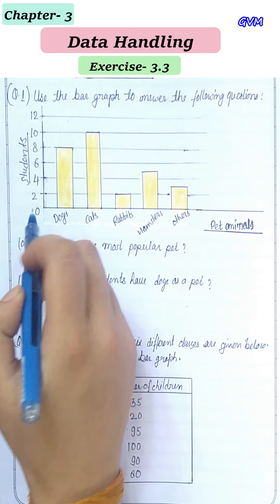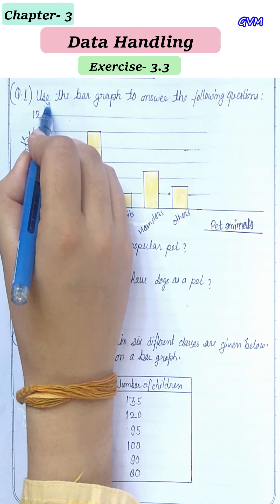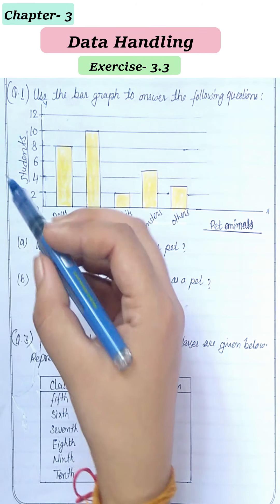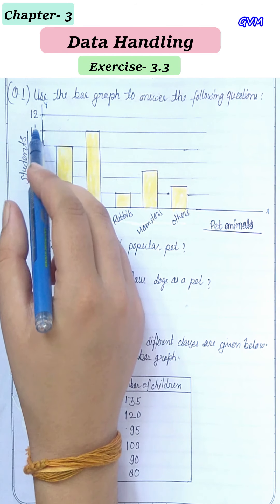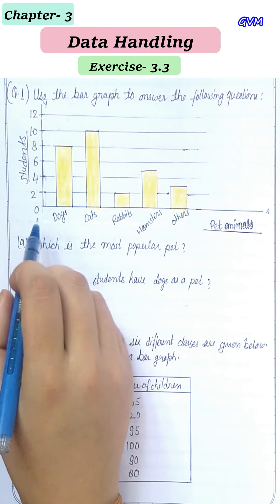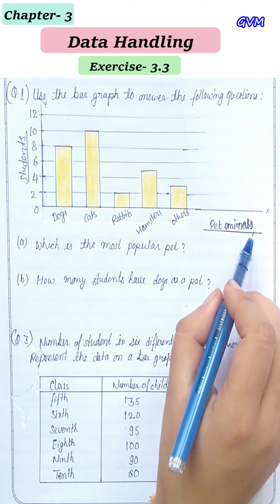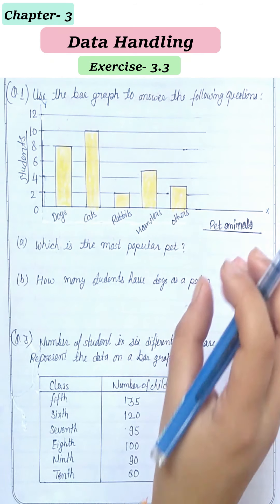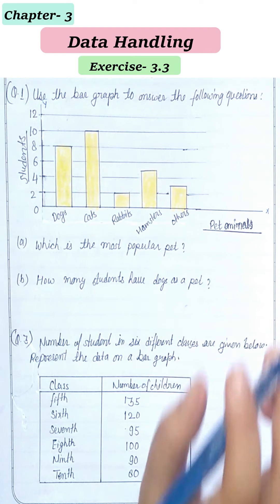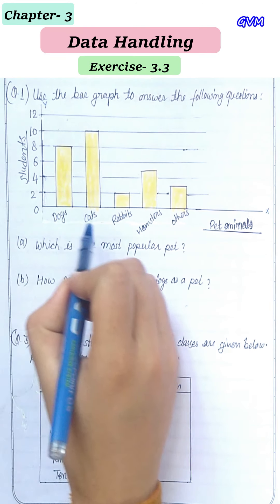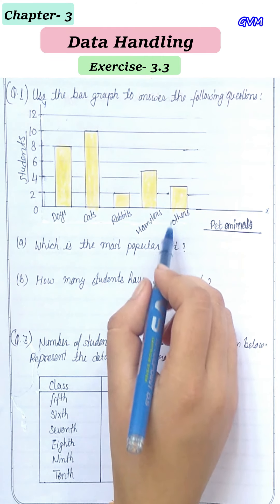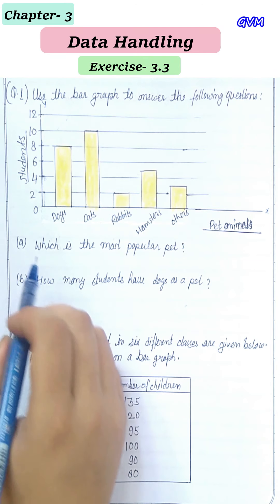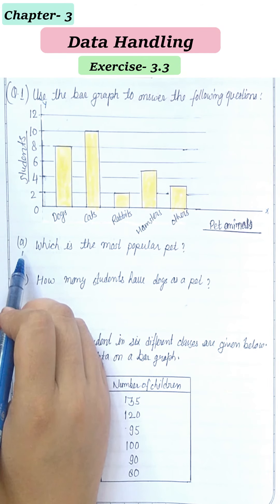We are given a bar graph. On the y-axis we have the number of students: 0, 2, 4, 6, 8, 10, and 12 students. On the x-axis we have the number of pet animals which students like — these are called pet animals — like dogs, cats, rabbits, hamsters, and others.